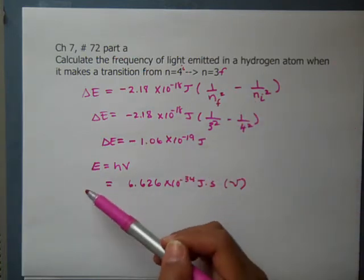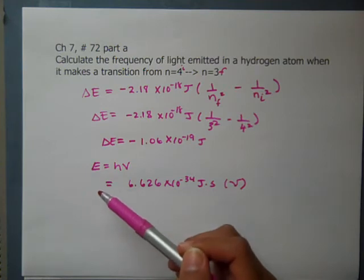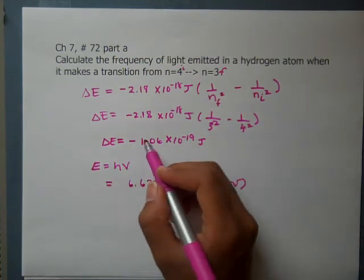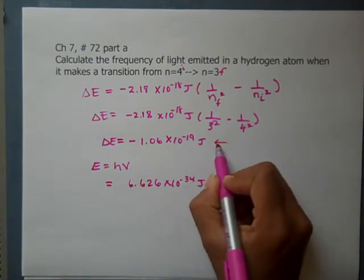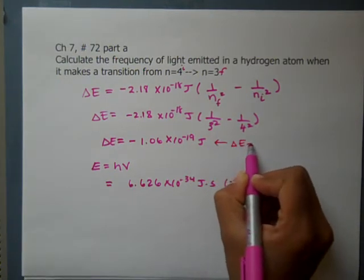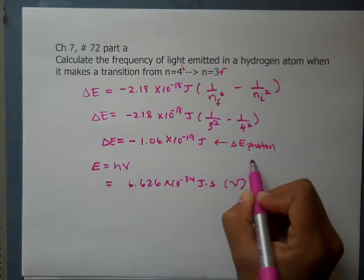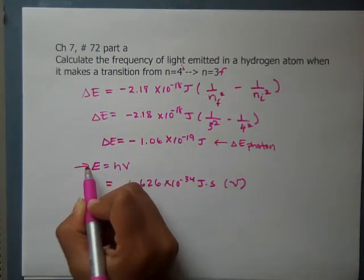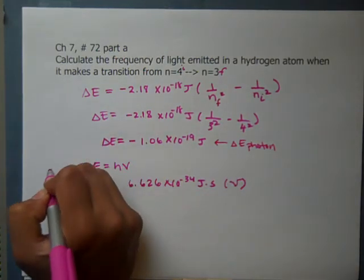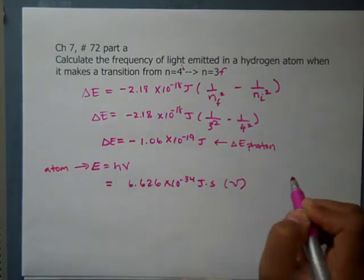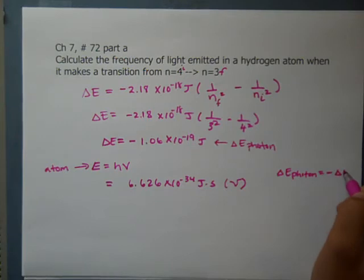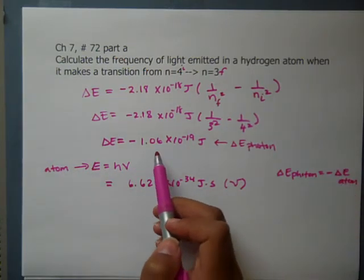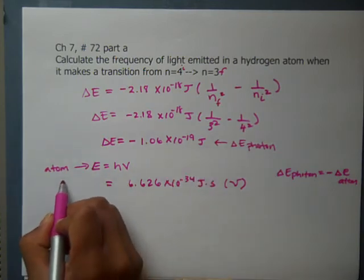If we plugged in a negative E here, we would have a negative number. But remember, E of the photon is what we actually found. This is E of photon, while that E is E of the atom, and they are opposite signs. So Delta E of photon equals negative Delta E of the atom.